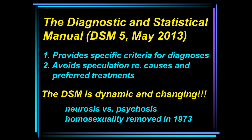Today, psychiatric diagnoses are made based on the Diagnostic and Statistical Manual. The most recent version is Edition 5, which came out in 2013. The DSM provides specific criteria for psychiatric diagnoses. If you open it up, you'll see different psychiatric diagnoses and the criteria for each diagnosis to be made. For instance, you might see a group of symptoms where the individual would have to show three of five symptoms, and then maybe another category where they would have to show six of eight symptoms. So it's very specific.